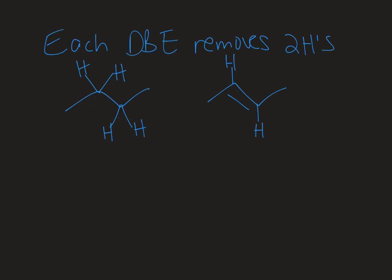So each double bond equivalent is going to remove two hydrogens from a structure. So if we look at an example here on the left where we have no pi bond, and then the example on the right where we have one pi bond, you can see that each of the carbon atoms that is a part of that double bond is missing one H. So when a double bond equivalent is present, it's going to be two Hs less than what the formula would be if it wasn't present.